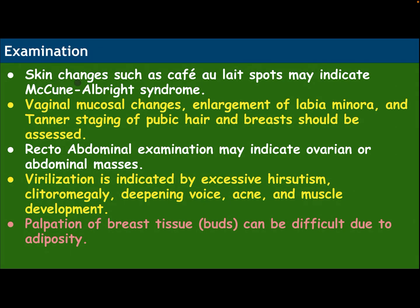On examination, skin changes such as café-au-lait spots may indicate McCune-Albright syndrome. Vaginal mucosal changes, enlargement of labia minora, and Tanner staging of the pubic hair and breast should be assessed. Recto-abdominal examination may indicate ovarian or abdominal masses. Virilization is indicated by excessive hirsutism, clitoromegaly, deepening voice, acne, and muscle development. Palpation of the breast tissue or breast buds can be difficult due to adiposity.